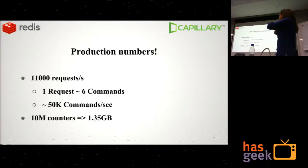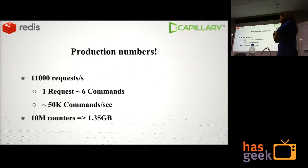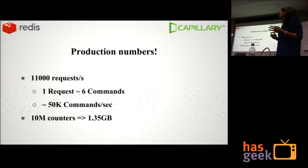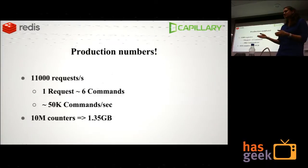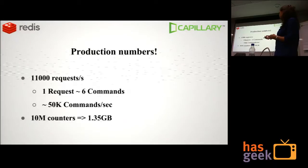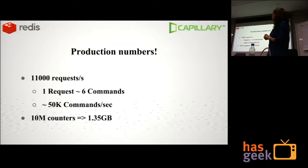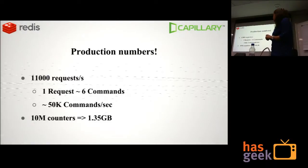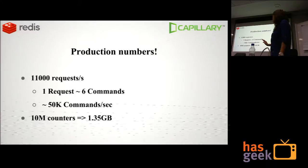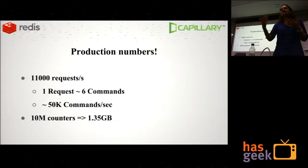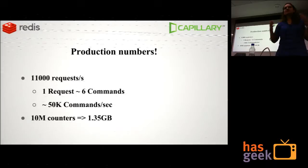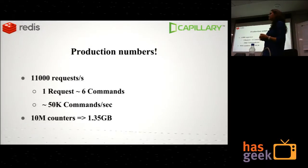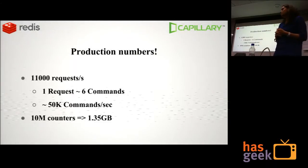These are the production numbers. We are currently achieving around 11,000 requests per second, where each request is approximately equivalent to one to six Redis commands, so we are hitting around 50,000 commands per second. The memory footprint is also very low — considering we are storing entire email IDs, mobile numbers, and such large keys, memory used is around 1.35 GB for 10 million counters.